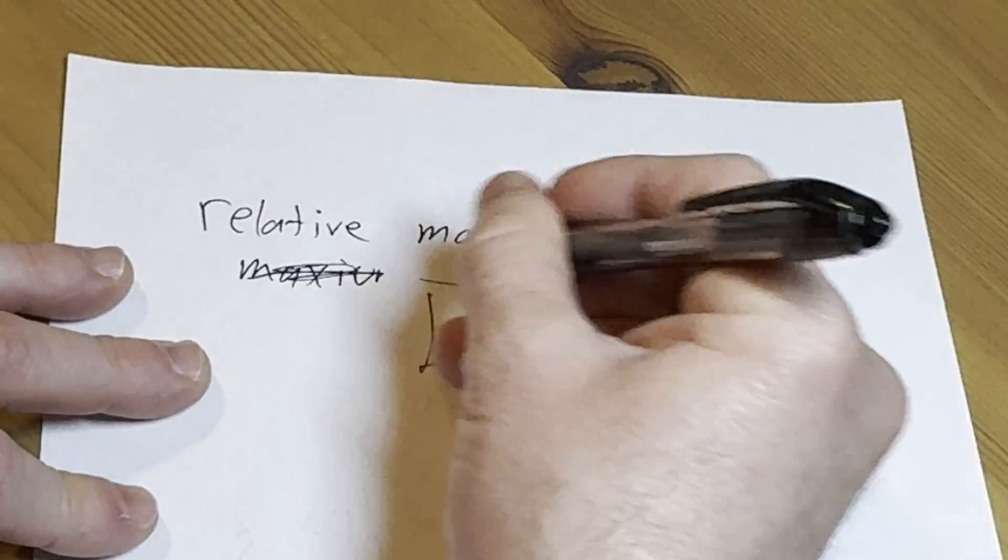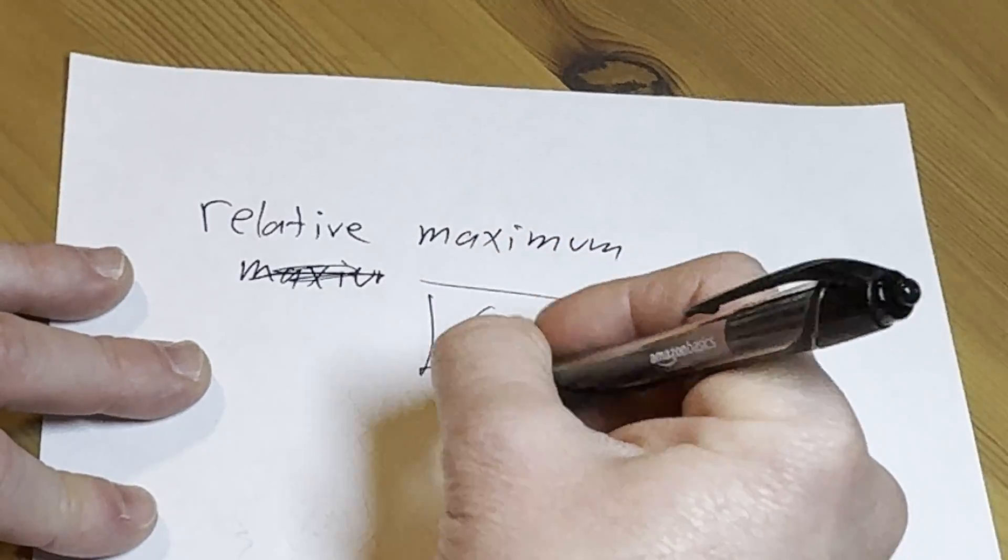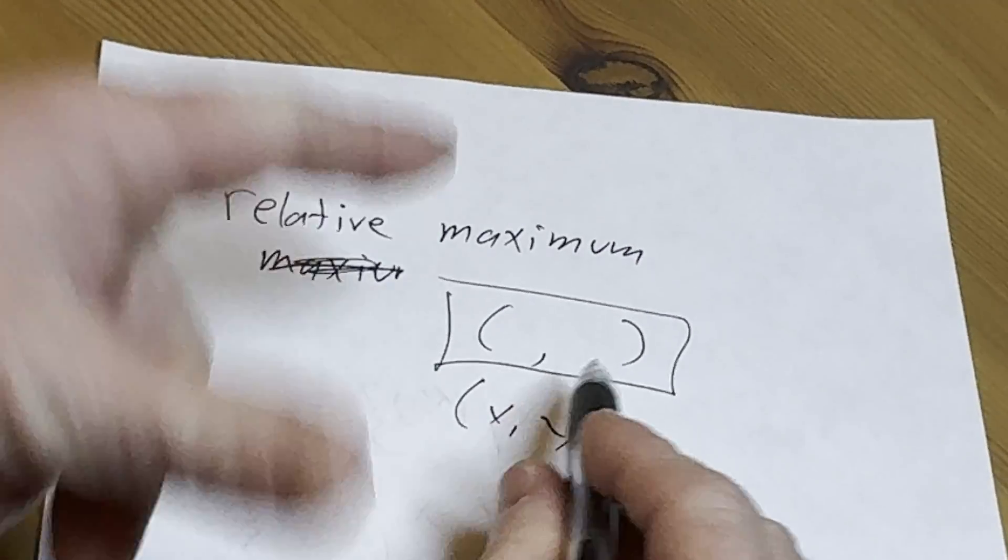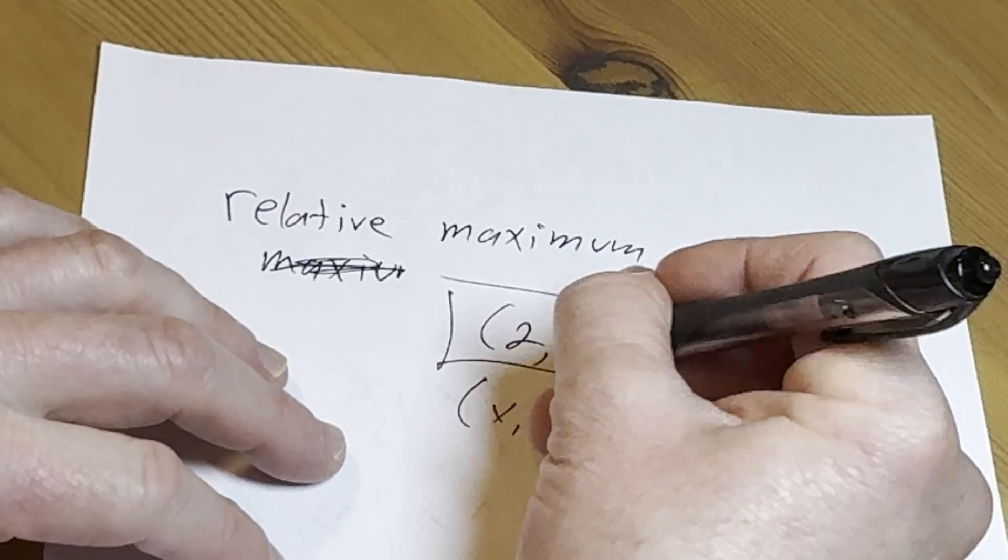So that's fine. They're emphasizing, okay, it is an ordered pair, but it's not. It's not. So let's say the answer is 2, 6. It's not the answer. The maximum is the y value, right? So it should say relative maximum occurs.